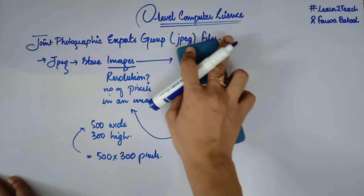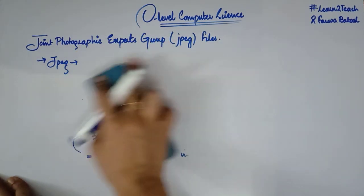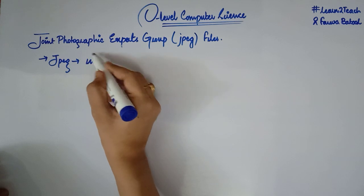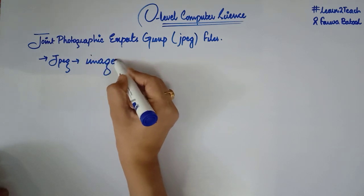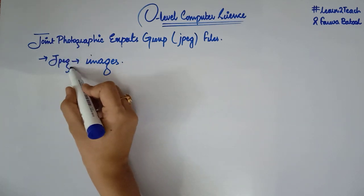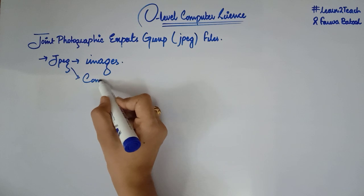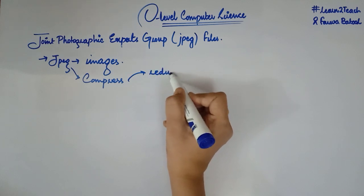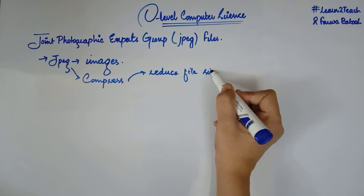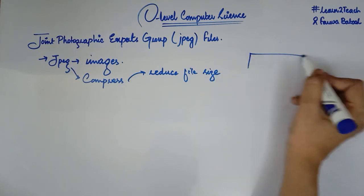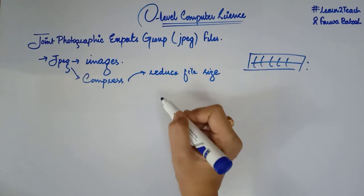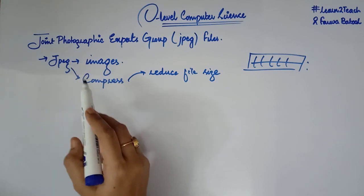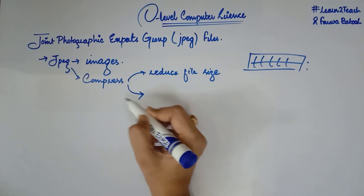Moving towards JPEG images: the JPEG file format is used to store images, and the major thing hidden in this format is that it compresses images in order to reduce the file size, so that images can occupy less storage and less memory in a computer system.